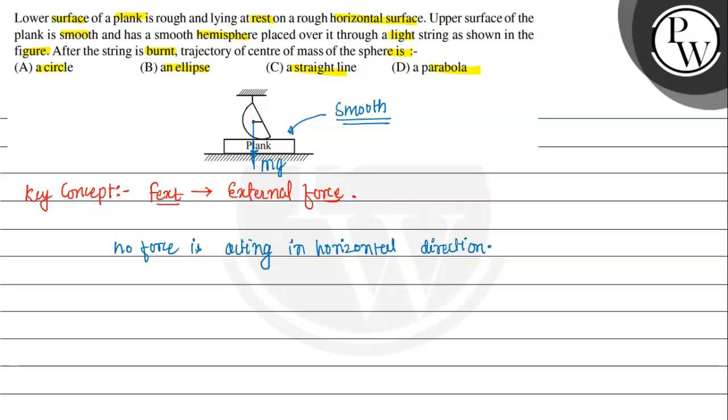So this means the center of mass is the motion, which is the downward direction, which is the vertical direction. So here, the motion of the center of mass will be straight line.